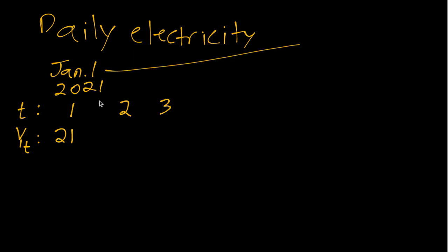So just to get extra explicit. So here y1, writing a 1 for the little t subscript equals 21. And maybe the next day we used 23 kilowatt hours. That's the next value in the time series. So we could also write y sub 2 equals 23. Maybe the next day is down to 19. And so on.